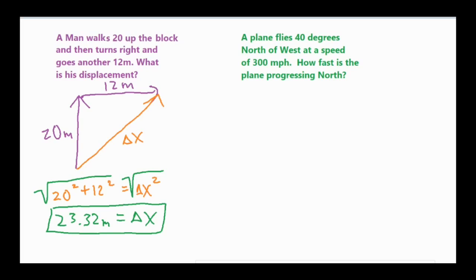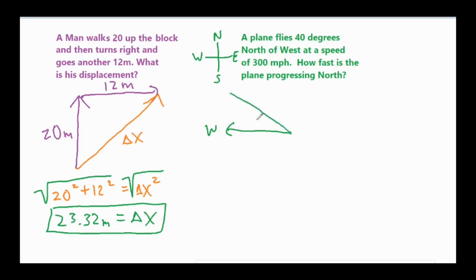For our second problem, we have a plane that flies 40 degrees north of west. Here are our cardinal directions — north, south, east, and west. When they say 40 degrees north of west, that means west is this direction, and then it's 40 degrees north of west, which means you're tilting up 40 degrees this way.